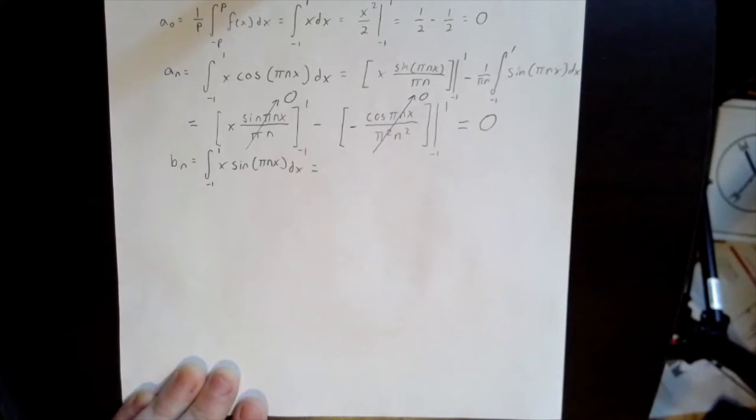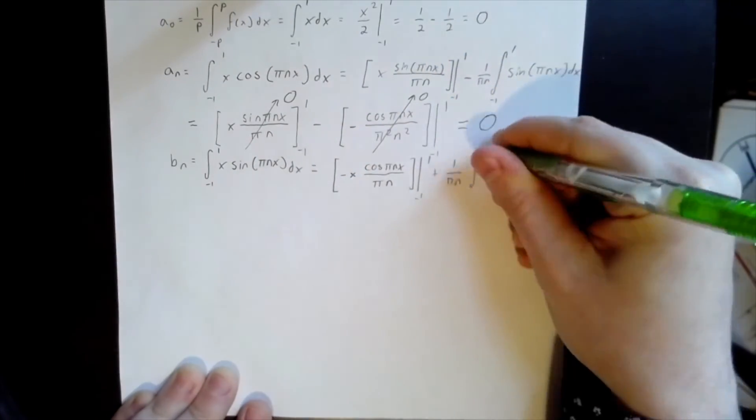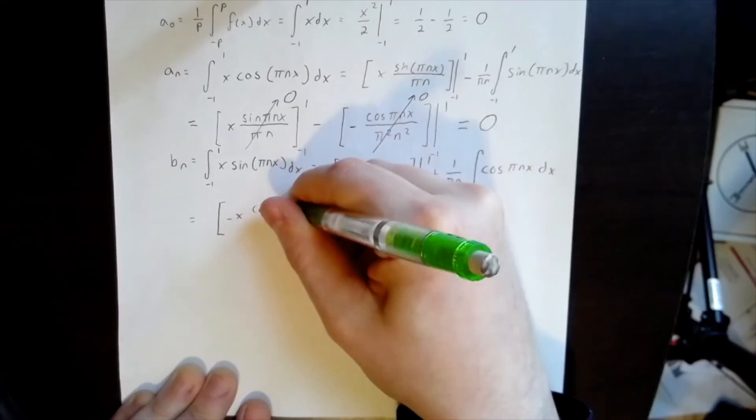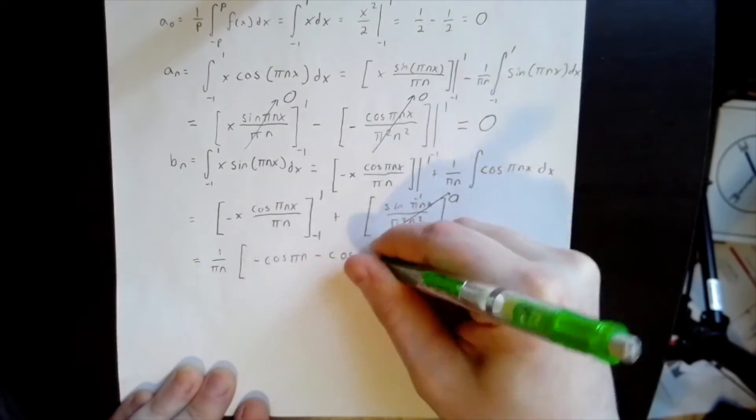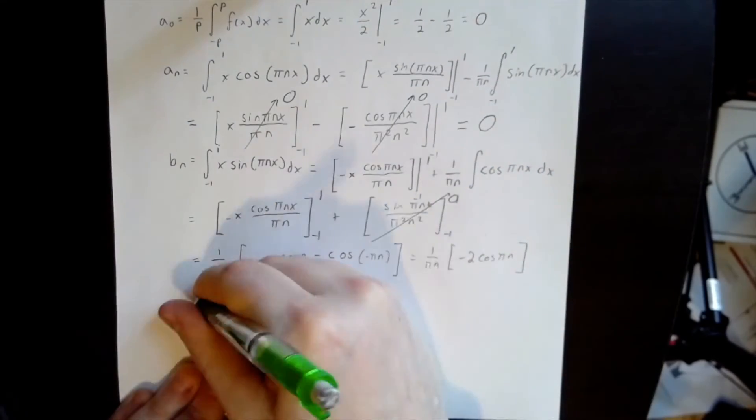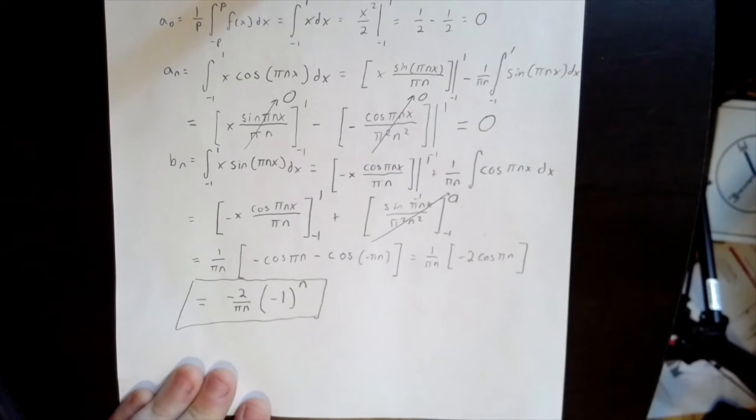All that remains is to calculate the coefficients b_n of the sine terms. We proceed again with integration by parts. Finally, a non-zero result. We've shown that the coefficients b_n on the sine terms are equal to negative 2 over pi n times negative 1 to the n.